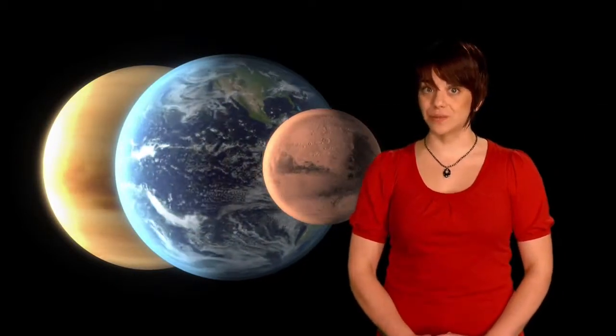Venus, Earth and Mars are grouped closely together in the inner solar system. These three planets have much in common, such as their rocky composition and geological features, and they are the only terrestrial planets that possess atmospheres. By understanding our closest planetary neighbors, we can learn more about the evolution of our planet.